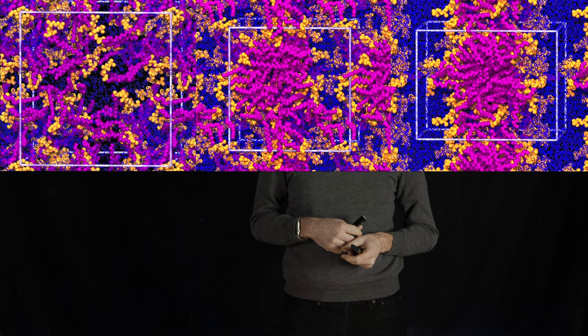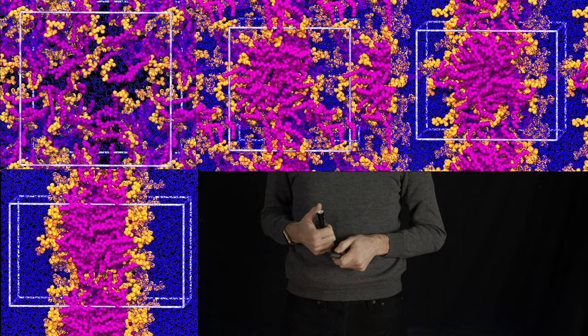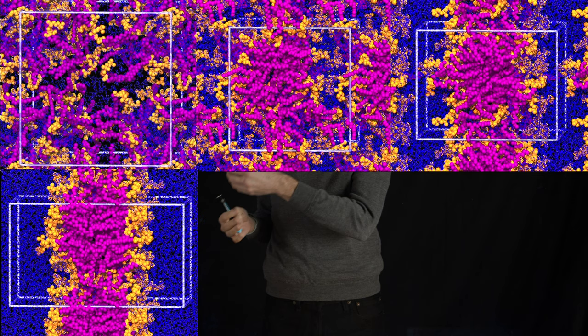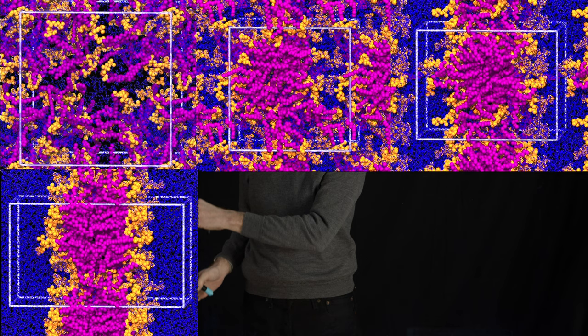What then happens after, say, 20 nanoseconds or so, is this. Now, all the head groups are facing the outside because it was so expensive to put the head groups inside lipid bilayer. And you see now that you have a pure water phase out here and a pure water phase on the other side. And they are in fact in contact with each other since it's periodic.